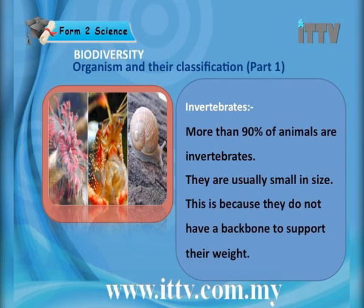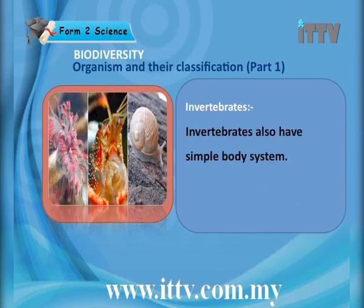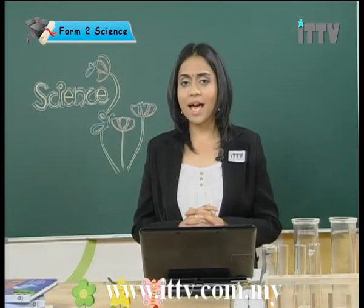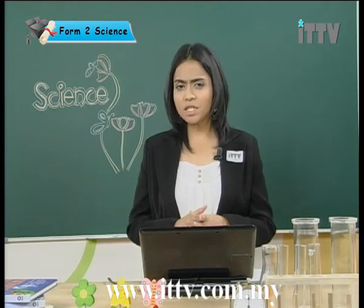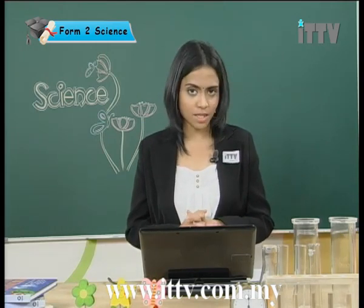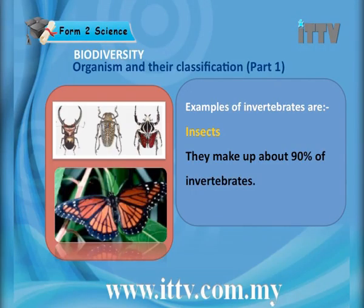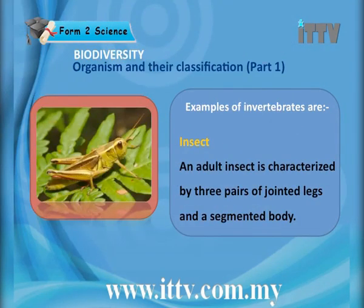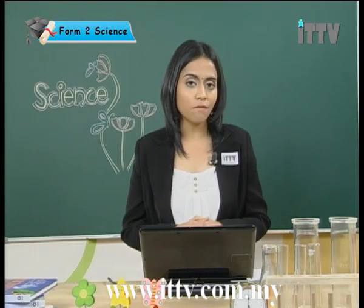More than 90% of animals are invertebrates. They are usually small in size because they do not have a backbone to support their weight, and they have a simple body system. Examples of invertebrates include insects, which make up about 90% of invertebrates. An adult insect is characterized by three pairs of jointed legs and a segmented body — meaning six legs in total.